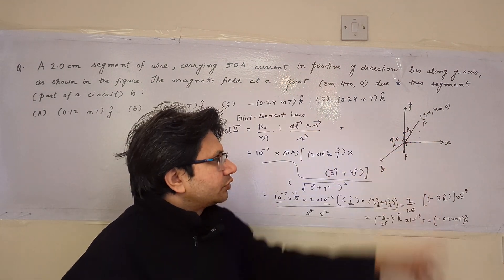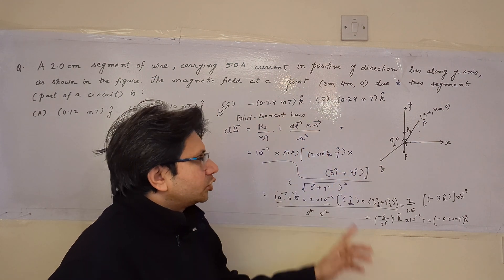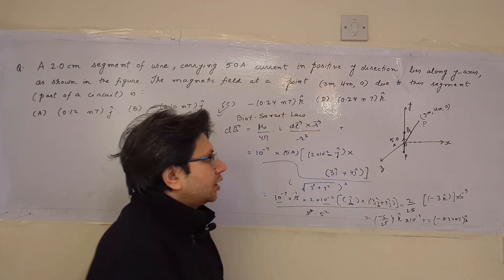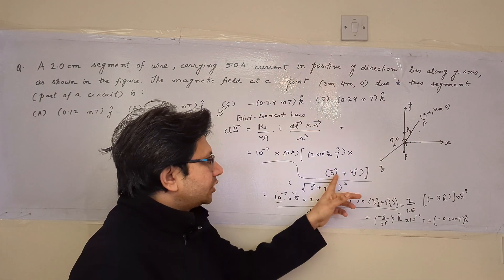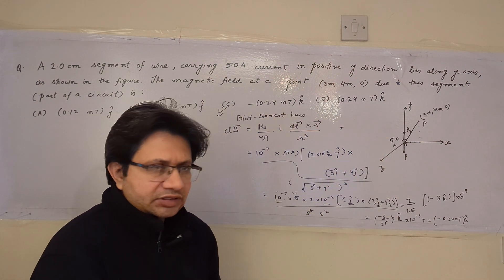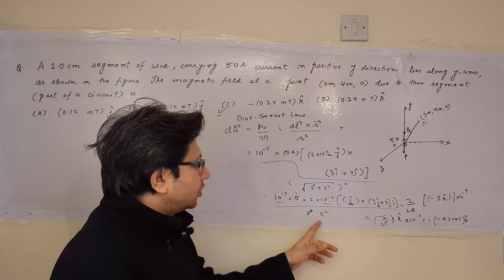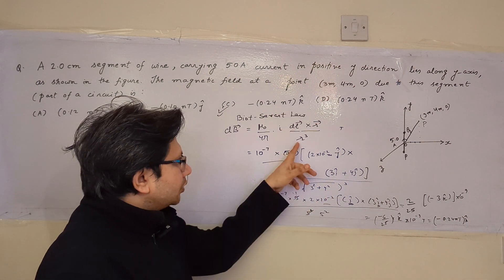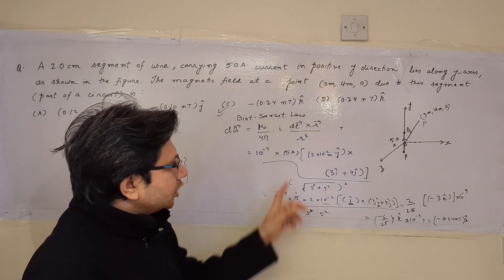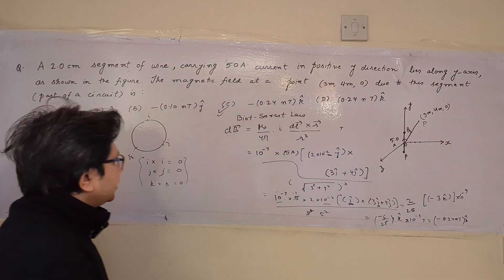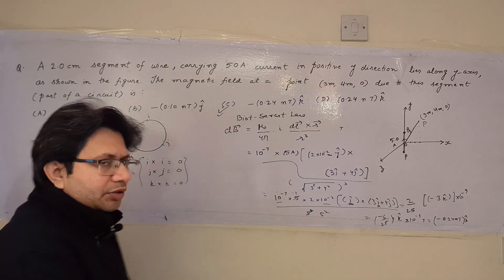The denominator is r³, so we calculate r = |OP| = √(3² + 4²) = 5, giving r³ = 125. One factor of 5 cancels, leaving 5² = 25. Applying cross product rules — î×î = 0, ĵ×ĵ = 0, k̂×k̂ = 0 — and the cyclic/anti-cyclic rules, ĵ×î = −k̂ gives the −3k̂ term while the ĵ×ĵ term is zero.